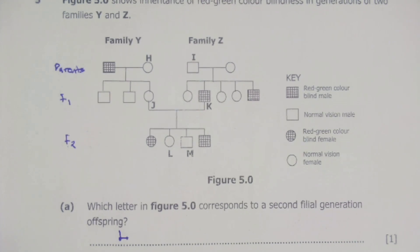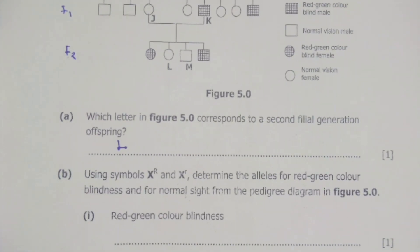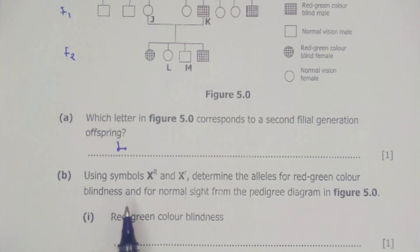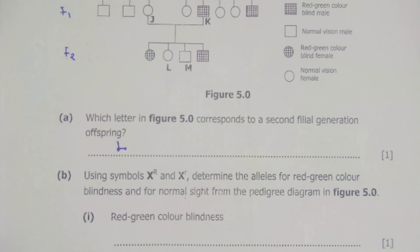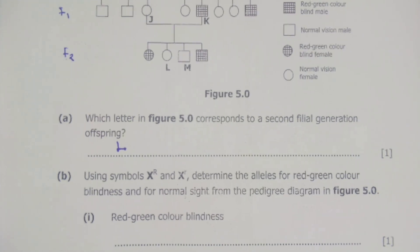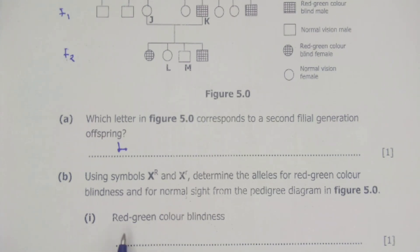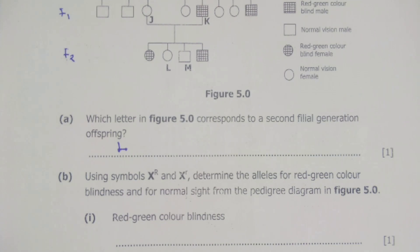The next question is B, which says: using symbols X with capital R and X with small r, determine the alleles for red-green color blindness from the pedigree diagram in figure 5.0. We are trying to find which alleles give color blindness. For color blindness, it will be X with a small r, because it is a recessive inheritance.